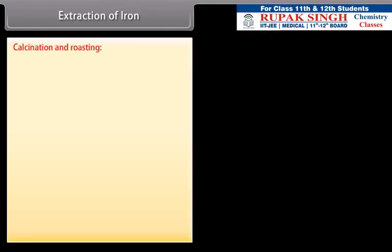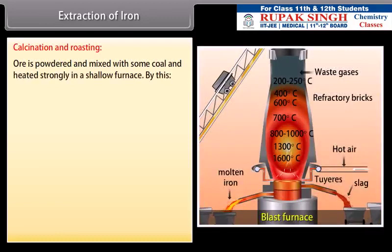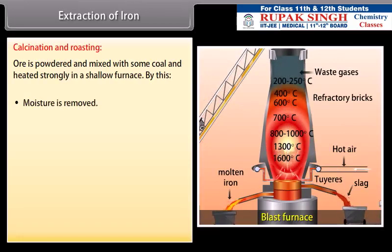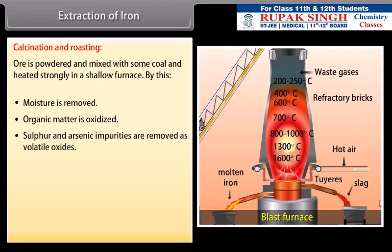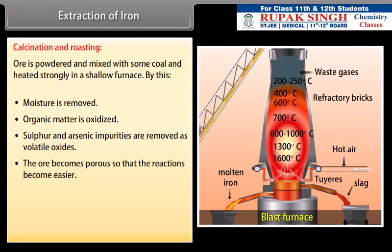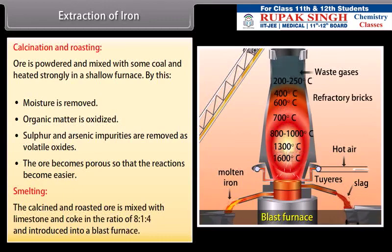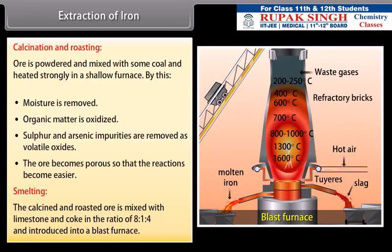Calcination and roasting. Ore is powdered and mixed with some coal and heated strongly in a shallow furnace. By this, moisture is removed, organic matter is oxidized, sulfur and arsenic impurities are removed as volatile oxides, and the ore becomes porous so that the reactions become easier. Smelting: The calcined and roasted ore is mixed with limestone and coke in the ratio of 8:1:4 and introduced into a blast furnace.